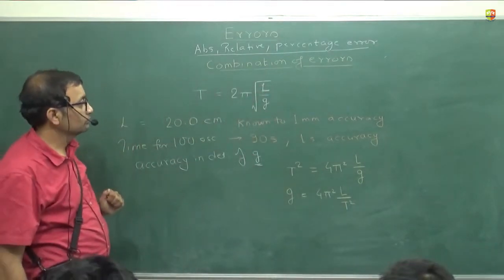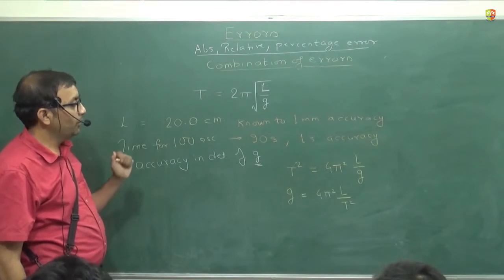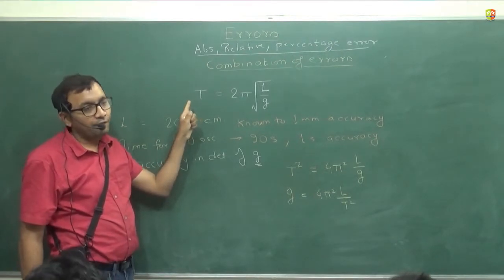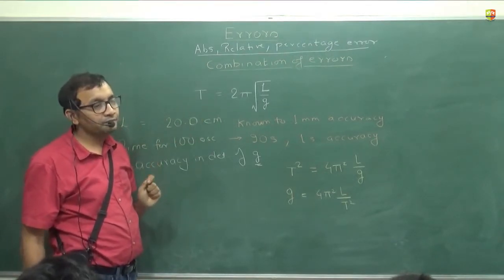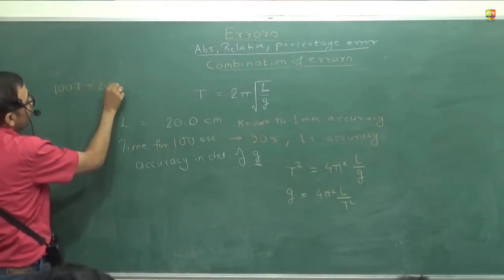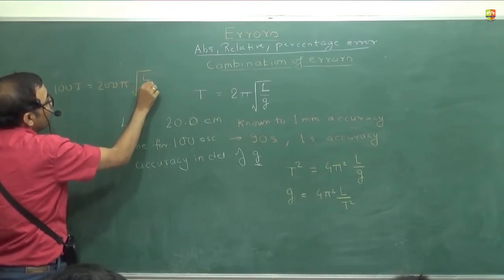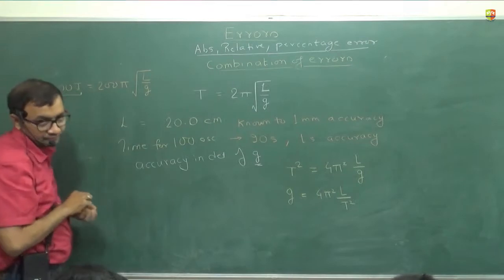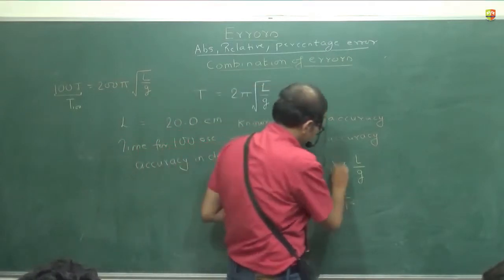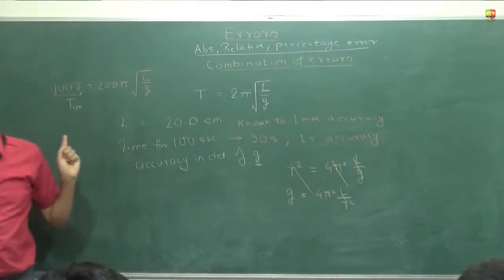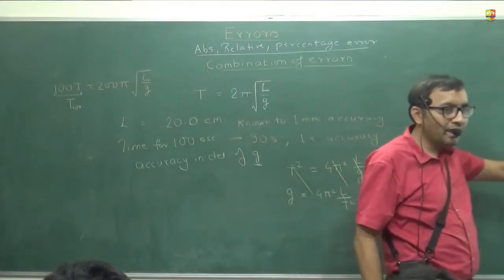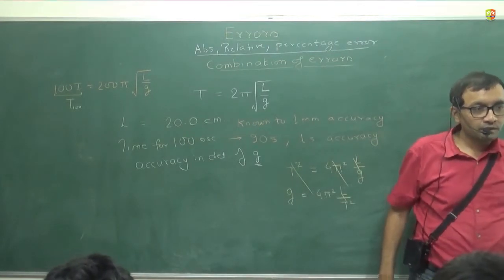So you will get t square equal to 4 pi square l by g. g will be 4 pi square l by t square. But the problem is that this is the equation for one time period. For 100 time period what will be the equation? You are not measuring t. You are measuring 100 times t. So you modify the formula by writing this as t100.